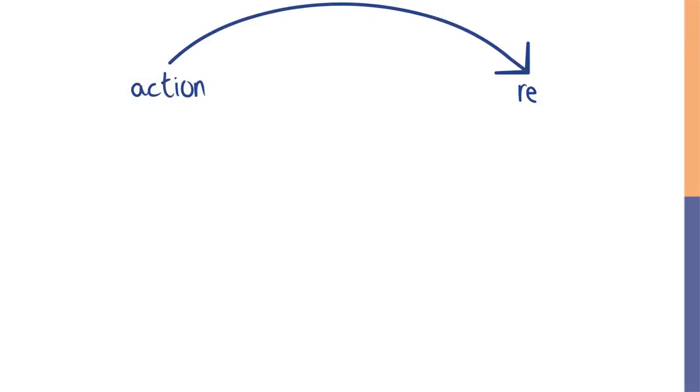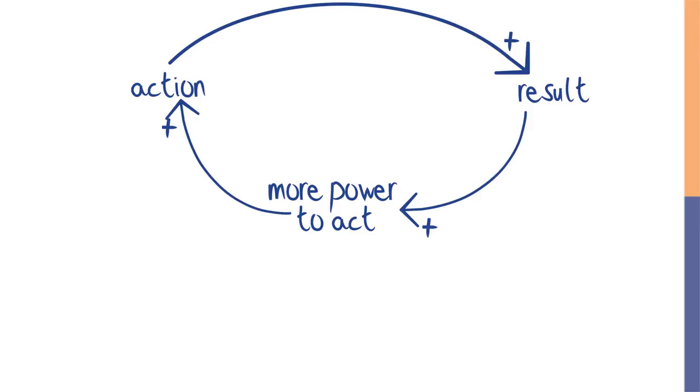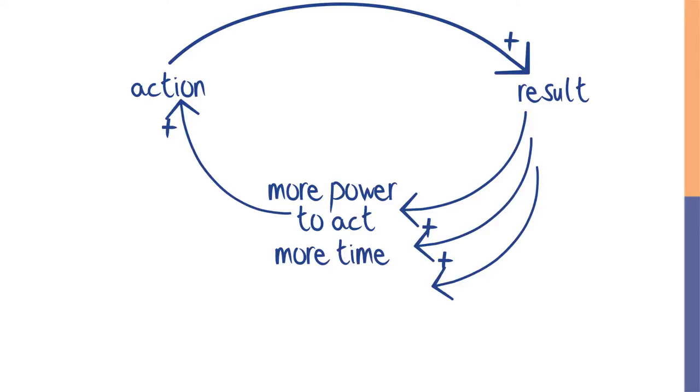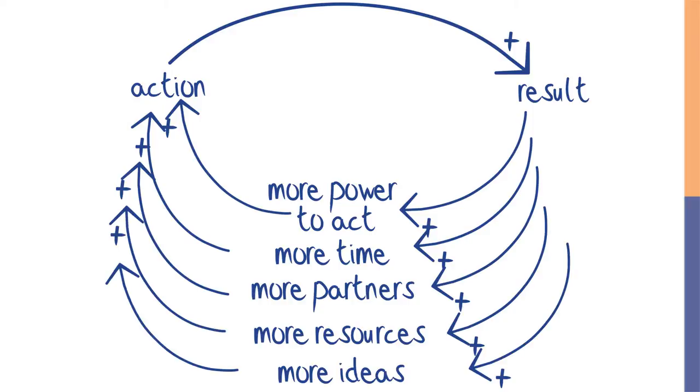Even if you don't explicitly have a strategy that incorporates reinforcing feedback, it's not too late to try. Write down an action you're intending to take. What result does that action lead to? And how does that result generate more power to act — more time, more partners, more resources, more ideas? Once you answer those questions, you've identified the reinforcing feedback loop that's part of your strategy. As we face huge global challenges and powerful vested interests, it's easy to feel as though our efforts are insignificant. But the power of reinforcing feedback reminds us that small seeds can grow into huge impacts.